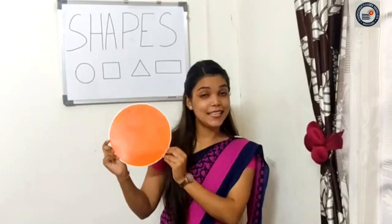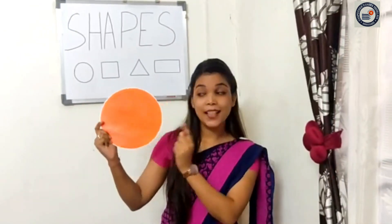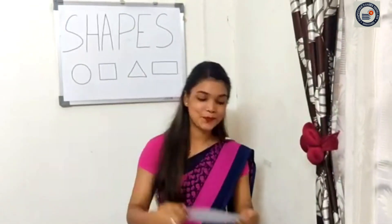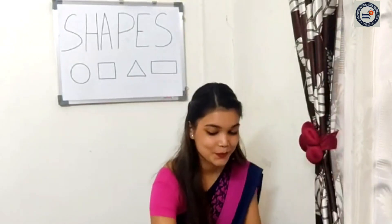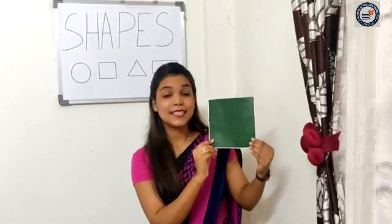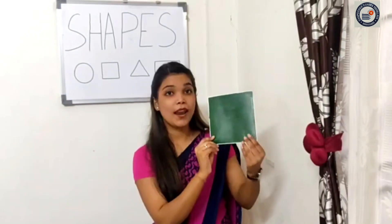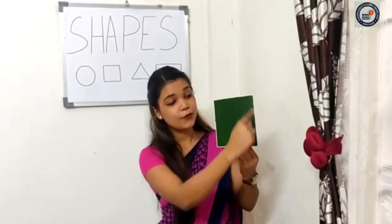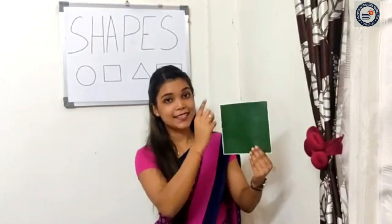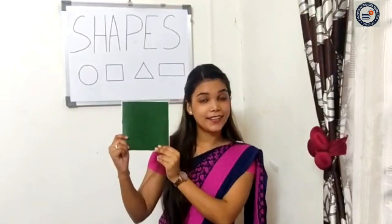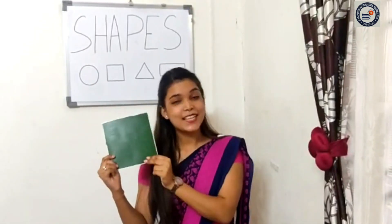This is a circle, this is a circle. This is a square, this is a square. We can see it everywhere, it has four sides. This is a square, this is a square.